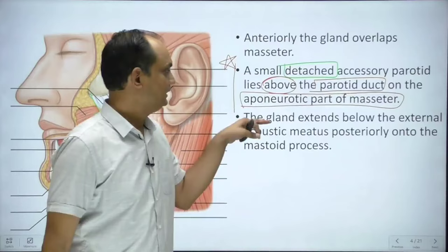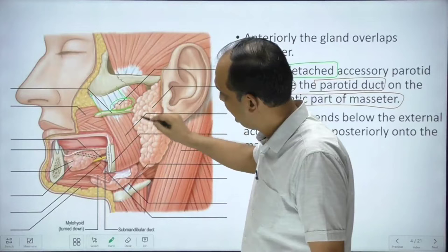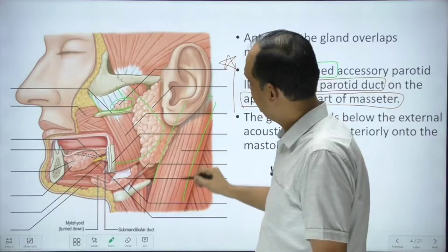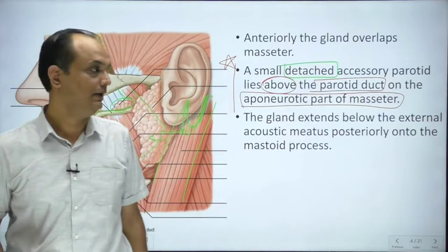The gland extends below the external acoustic meatus posteriorly on the mastoid process. Anteriorly, the gland is extending on the masseter muscle, and posteriorly it is approaching the mastoid process via the sternocleidomastoid. The gland is also approaching the posterior border of the mandible anteriorly.